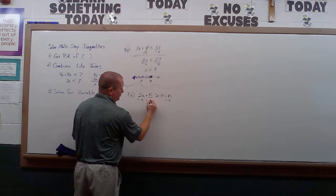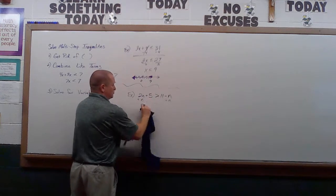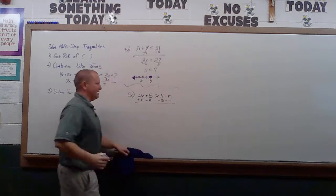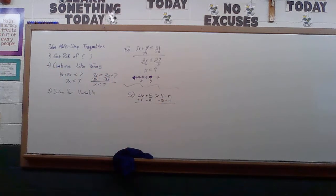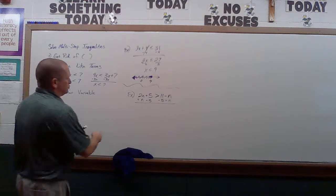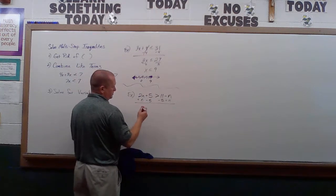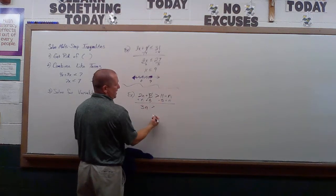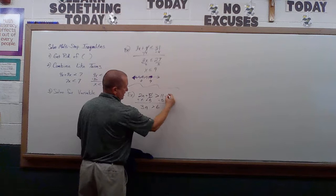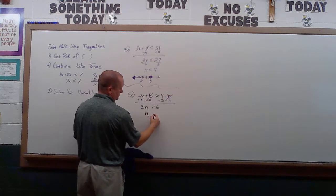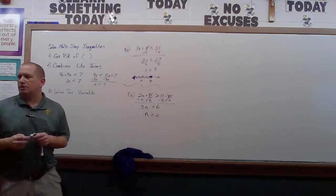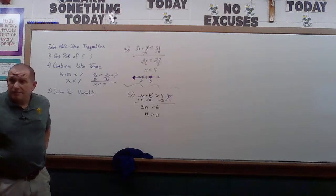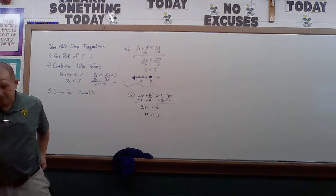Moving the n's to the left means moving numbers to the right. Subtracting 5 from both sides: 2n + n gives 3n, the 5's cancel, and 11 - 5 = 6. Then 3n > 6, so n > 2. Open or closed circle? Open. Which way do we shade? To the right.